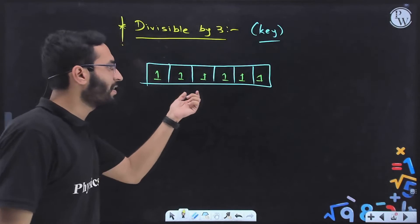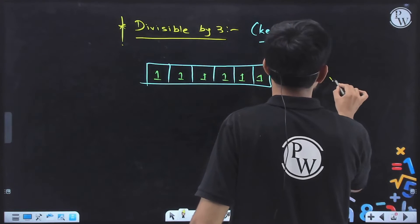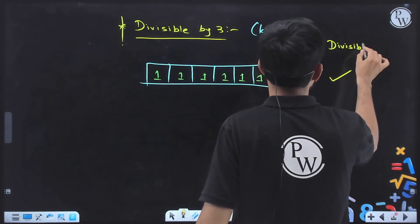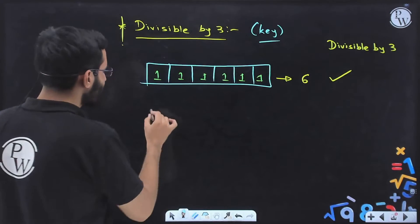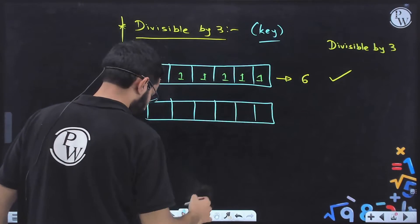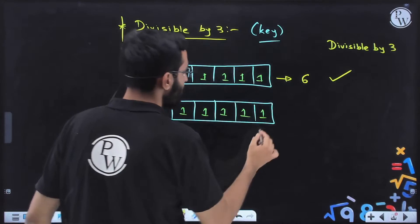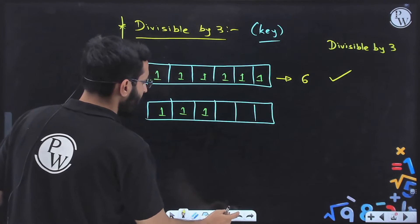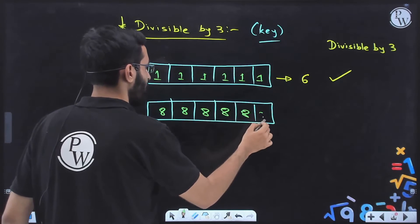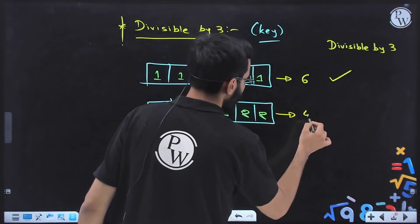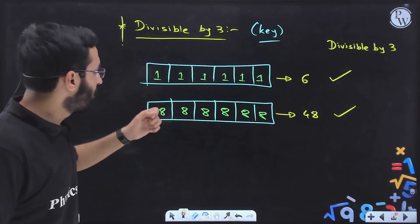Let us check if 111111 is divisible by 3. Sum of digits: 1+1+1+1+1+1 = 6, and 6 is divisible by 3 — yes. The largest six-digit number using only 1 and 8 is 888888. Sum of digits: 8×6 = 48, and 48 is divisible by 3 — yes. So both the smallest and largest numbers are divisible by 3.